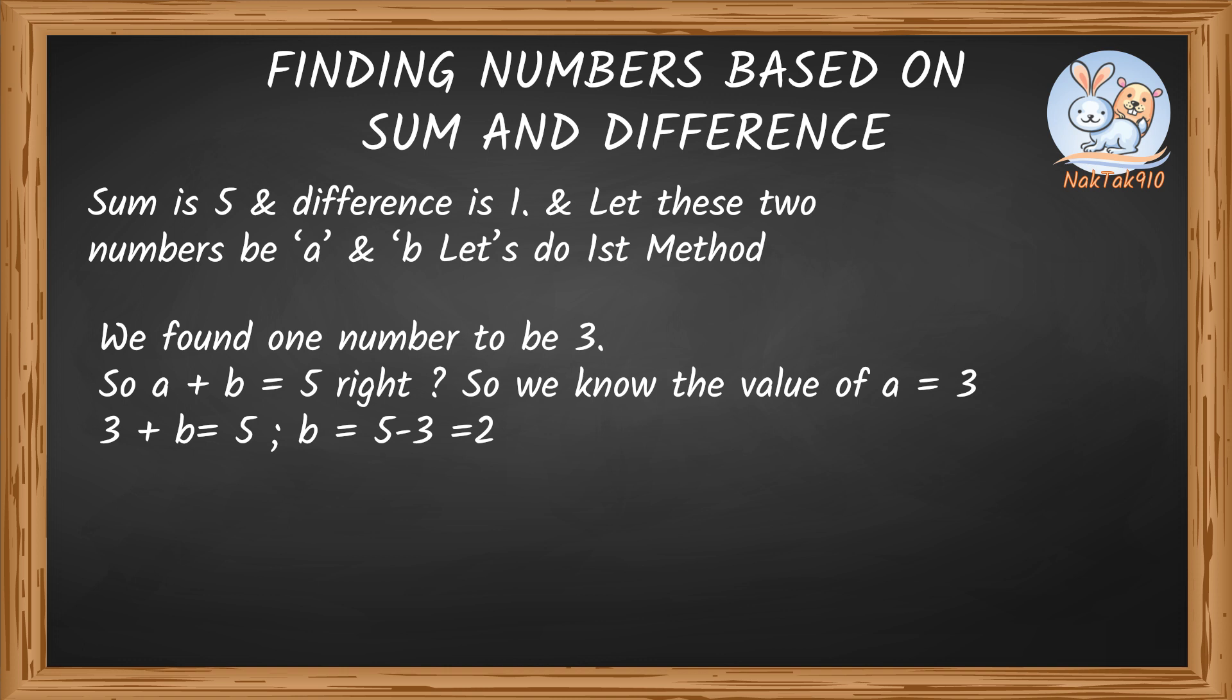Let's check if they're right. Sum equals 3 plus 2 equals 5. Difference is 3 minus 2 equals 1.